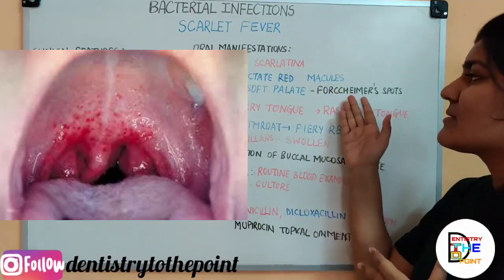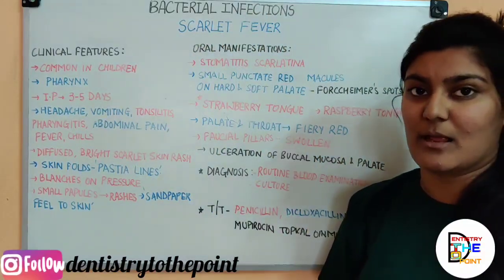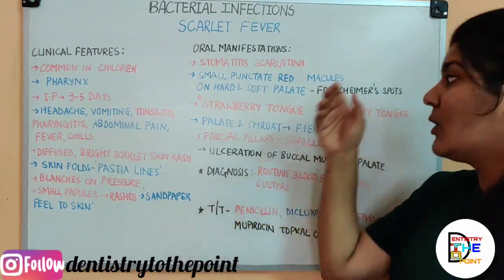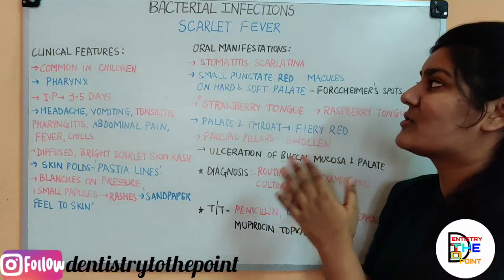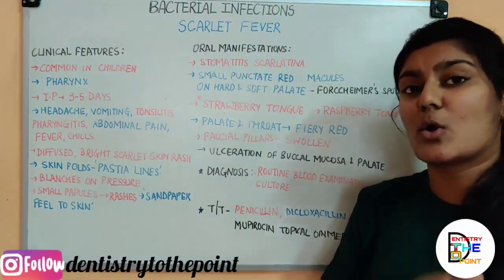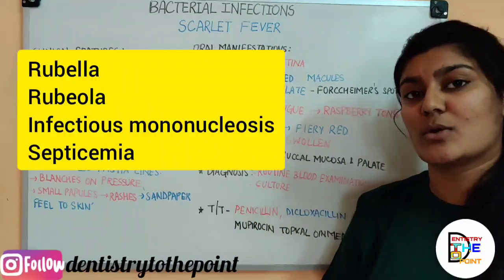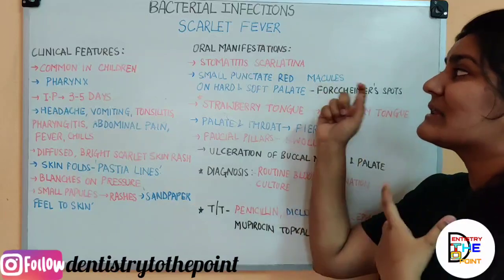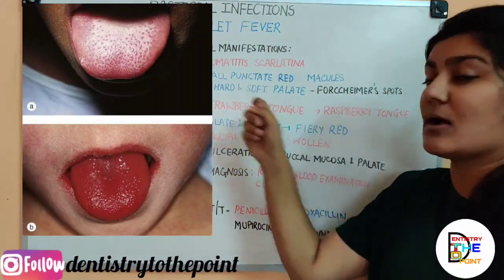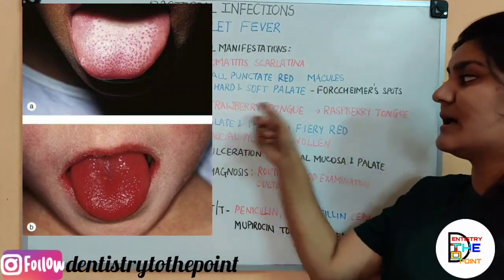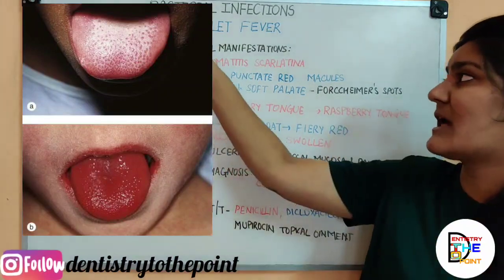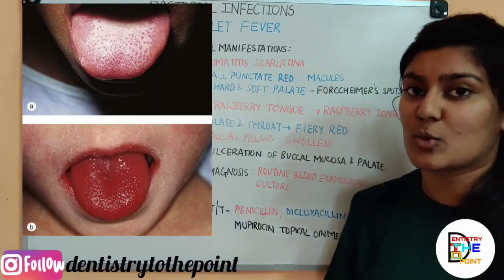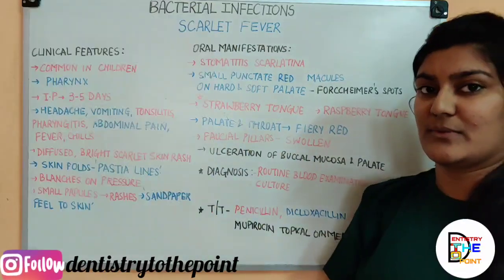Forchheimer spots — small punctate red macules on the hard palate, soft palate, and uvula — are not exclusively diagnostic of scarlet fever, because they are also seen in rubella, roseola, infectious mononucleosis, and septicaemia. What is actually diagnostic of scarlet fever is the strawberry tongue and the raspberry tongue. These two terms are very peculiar to scarlet fever and are an important MCQ point.